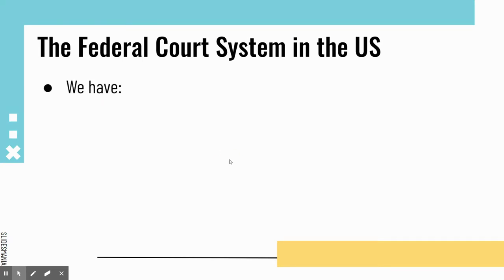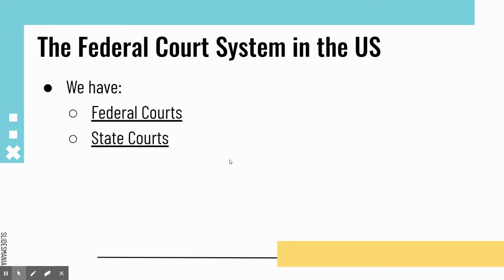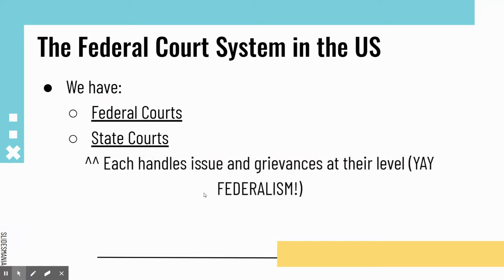Now, the federal court system in the United States is split into two parts: we have federal courts and then we have state courts. Each of these courts handles issues and grievances at their level — and that's federalism. Most issues start in state courts. Most of the things you see on TV are in state courts. But there are some things that do take place in the federal court system.